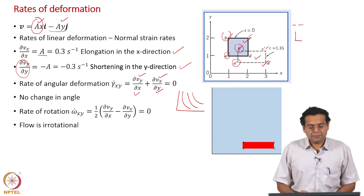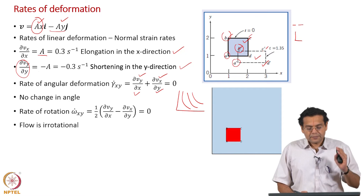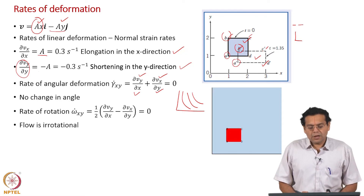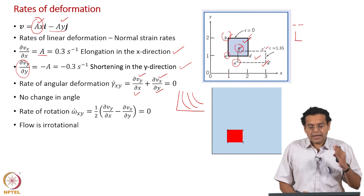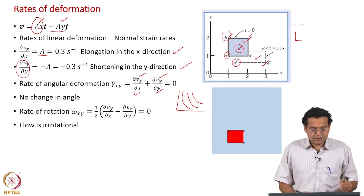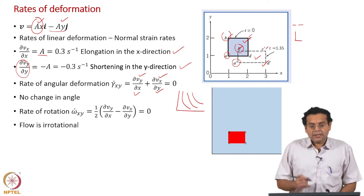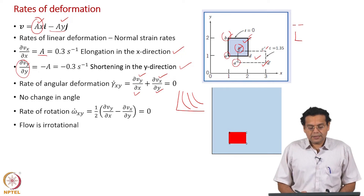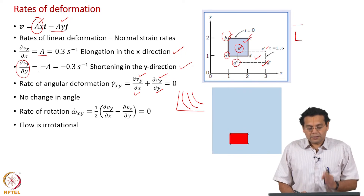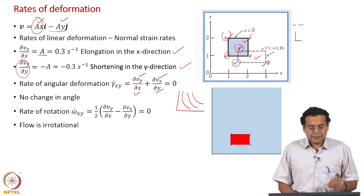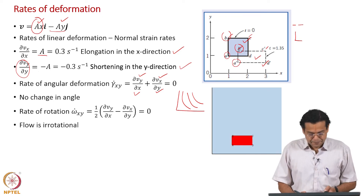In the earlier example there were no normal strain rates — only angular deformation and rotation were present. In this example, normal strain rates are present, but angular deformation and rotation are absent.